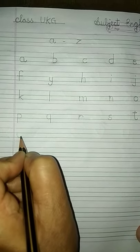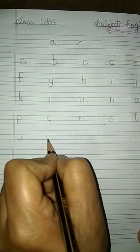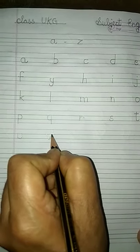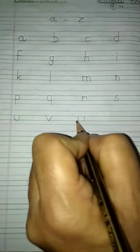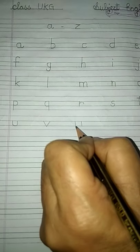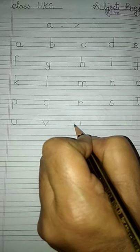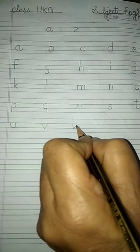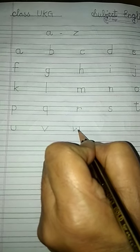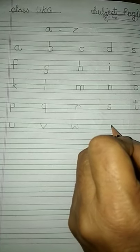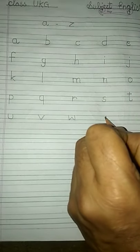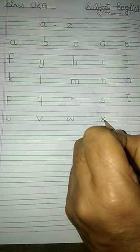Two slanting lines: V. W — two standing lines and in between the two standing lines one slanting line going upward and another slanting line coming downward: W. X — two slanting lines cutting each other: X.